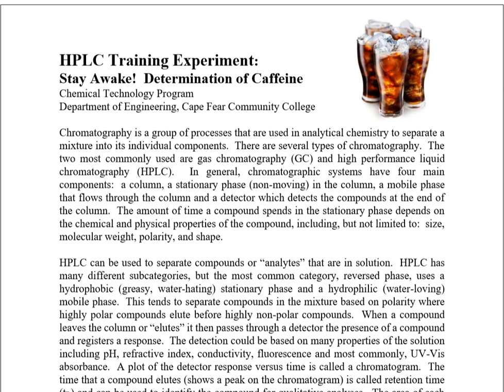In this lecture video we're going to be talking about caffeine and soda samples. You've already done a lab using soda — the phosphate in soda lab on ion chromatography. The issue here is that caffeine is not an ion; it doesn't carry a full positive or negative charge. It is an organic compound found in many sodas, and because of that it cannot be analyzed on the IC system — it has to be analyzed on the HPLC system instead.